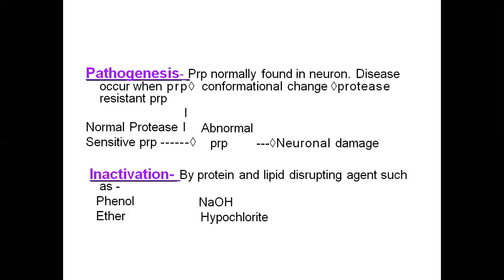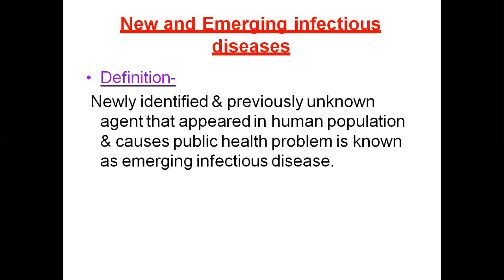Inactivation of prions: prion infections are inactivated by protein and lipid dispersion agents such as phenol, NaOH, ether, and hypochlorite agents, which are used as inactivating agents.